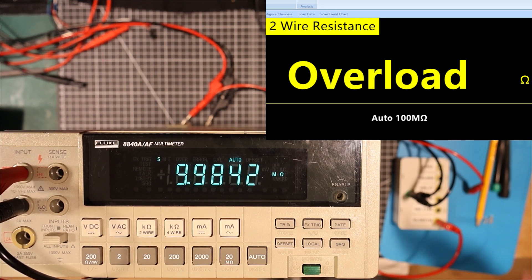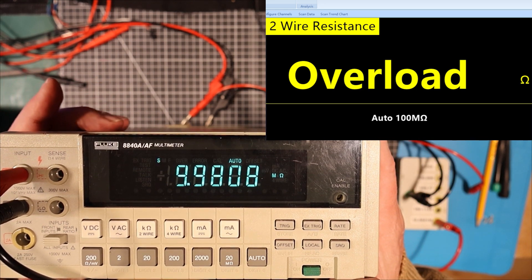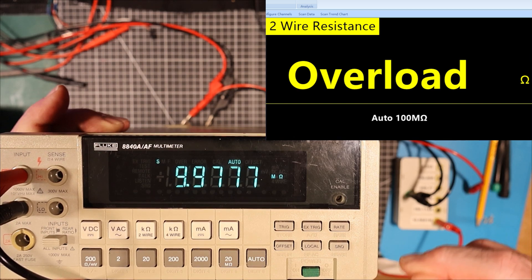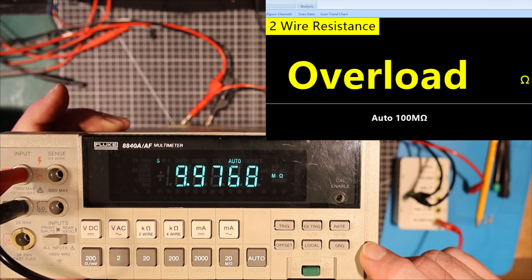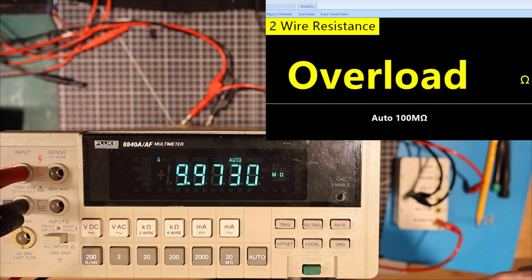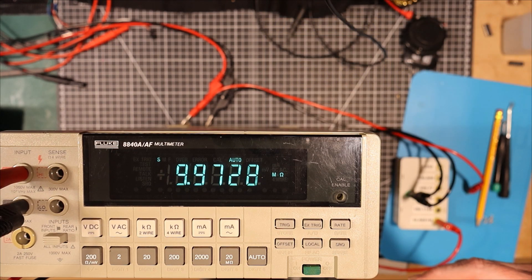Like I say, what I should really do is either borrow, beg, or steal a six and a half digit meter that's been recently calibrated so I can find out which one of these is the one to believe. As it stands right now, I'm pretty happy with this. Let's take a quick look inside it and see what it's like. See how well it's built.